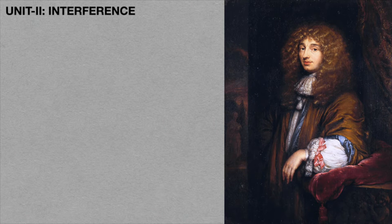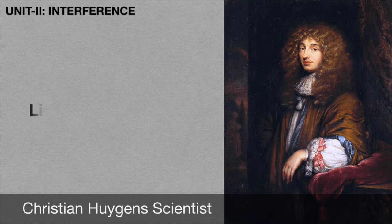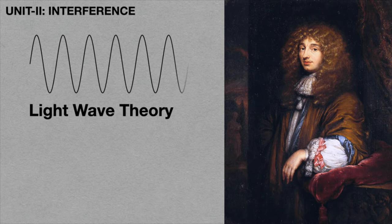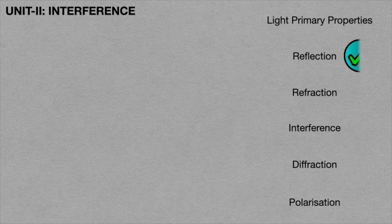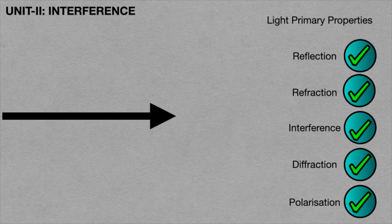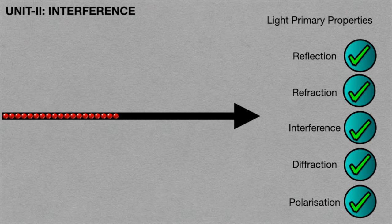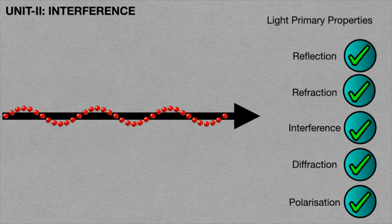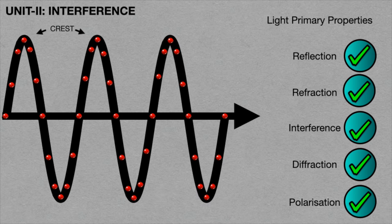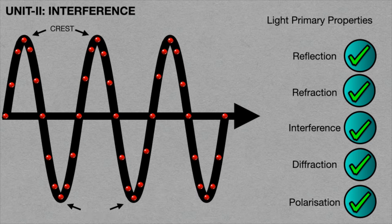After 100 years later, Christian Huygens proposed a wave theory. According to his theory, light travels in wave form. Based on his theory, he could successfully explain all primary properties of light. When the wave propagation travels in one direction, the particles always move perpendicular to the direction of wave propagation. In this, crests and troughs are formed. Crest means maximum amplitude attained by the particle, and trough means minimum amplitude attained by the particle.